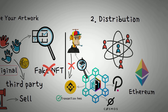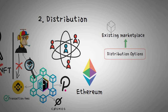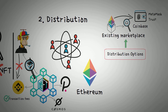There are two distribution options. Option one: listing on an existing marketplace. The blockchain you choose will determine which marketplaces you can use. For example, if you go with Ethereum, you can pick from popular ones such as OpenSea, Rarible, and Mintable. Creating an NFT on Ethereum is pretty easy and only requires an Ethereum wallet that supports NFTs — Coinbase will do the job, as will MetaMask and Trust Wallet. Choose your marketplace and follow the instructions they provide.